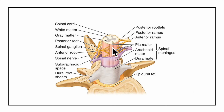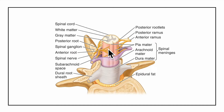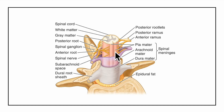Now let's learn about the meningeal coverings. The spinal cord is surrounded by three meninges: the outermost is the dura mater, the middle is the arachnoid mater, and the innermost is the pia mater. The space between the dura mater and the arachnoid mater is the subdural space, and the space between the arachnoid mater and the pia mater is the subarachnoid space, which contains the cerebrospinal fluid.